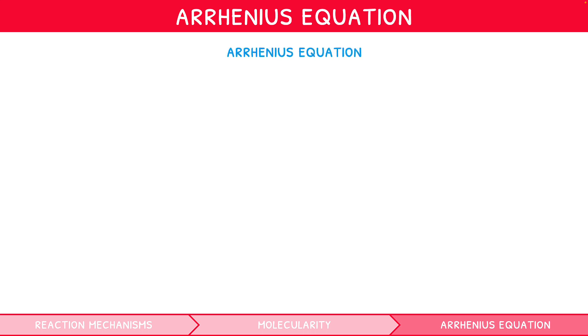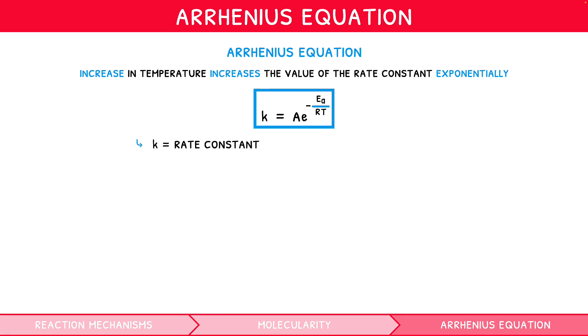This equation, present in the data booklet, defines how an increase in temperature increases the value of the rate constant exponentially. The equation is K equals AE to the power of minus Ea over RT, where K stands for the rate constant, A for the frequency factor, E for the mathematical function E, Ea for activation energy, R for the gas constant 8.31, and T for temperature in Kelvin.